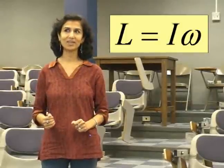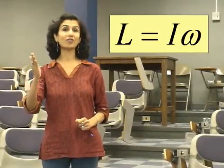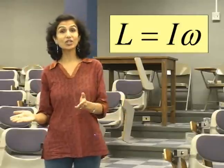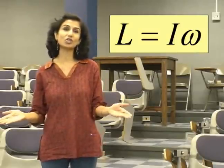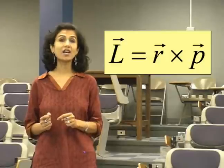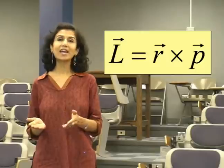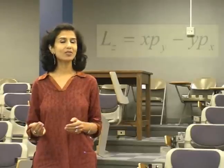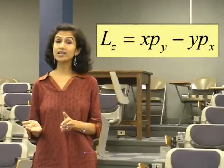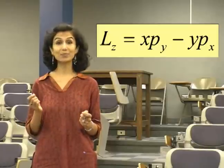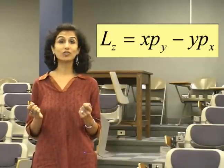Now for the answers to the concept test. If you got D, you are correct, because the angular momentum is I times omega. Remember, the rotational analog of mass is moment of inertia and the rotational analog of the linear velocity V is the rotational velocity omega. Angular momentum can also be defined in another way as R cross P, and you can see this is another vector. Here, R is the displacement vector of the particle and P is the momentum vector. In component form, the Z component of angular momentum L will be x times Py minus y times Px, where Py and Px are the y and x components of the linear momentum.